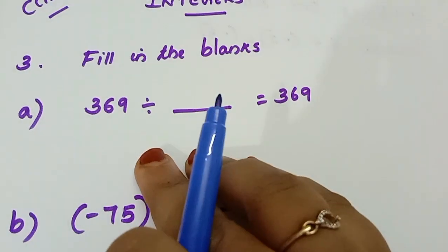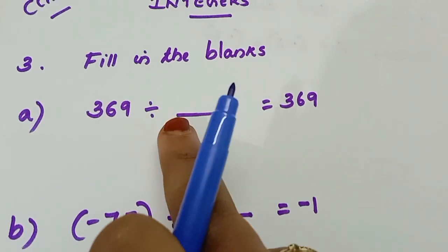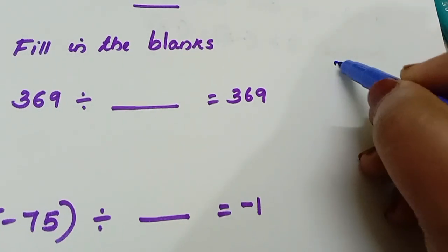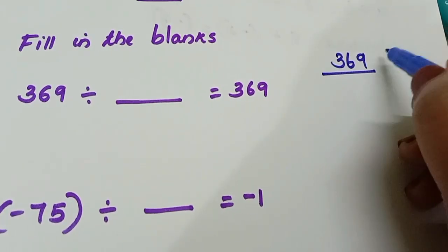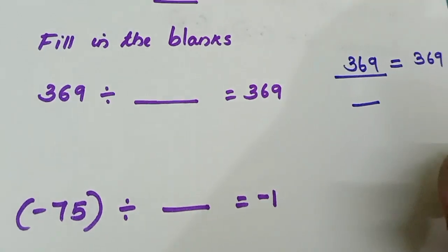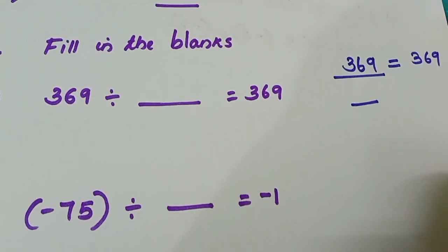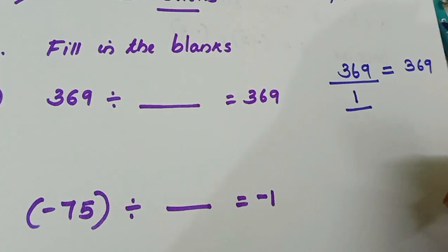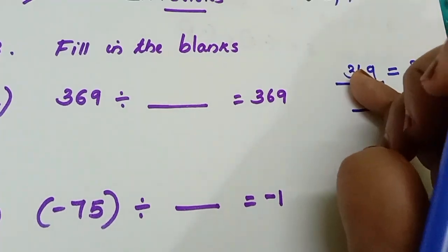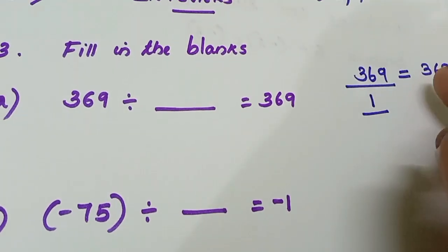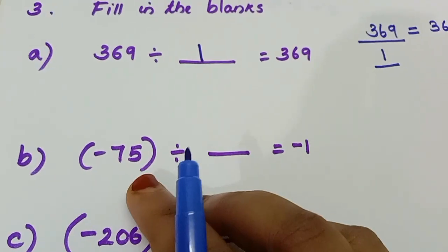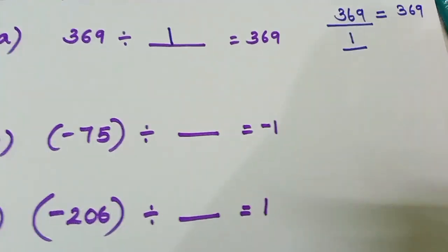First one, fill up. We are going to study the first one. 1 divide — because we learned that one divides one number. So what we do: 1 minus 75 divided by dash is equal to minus 75.